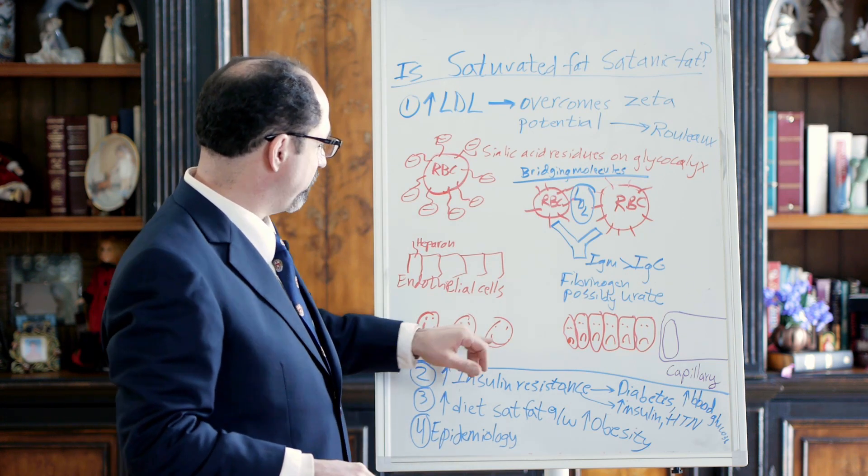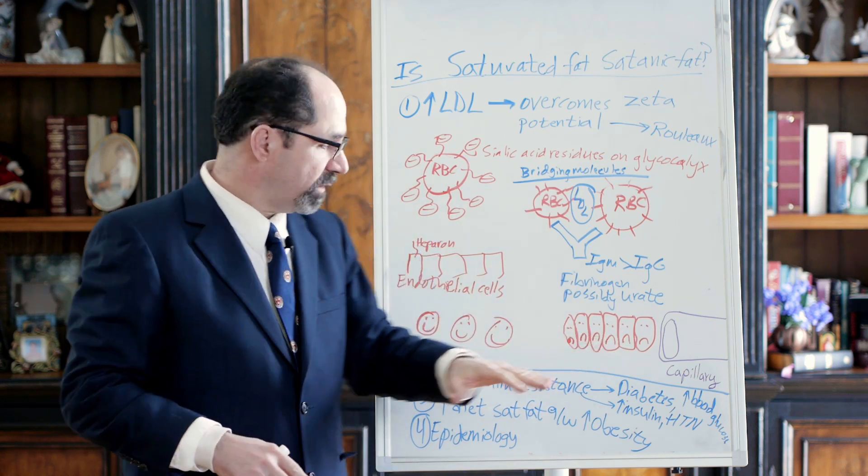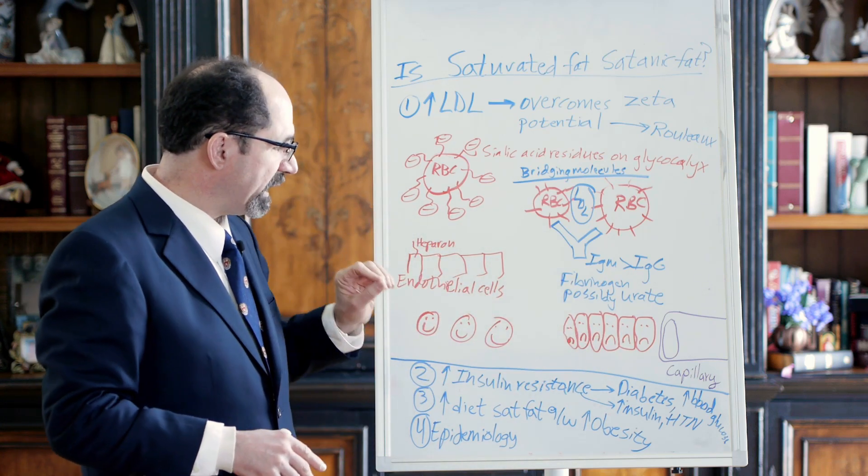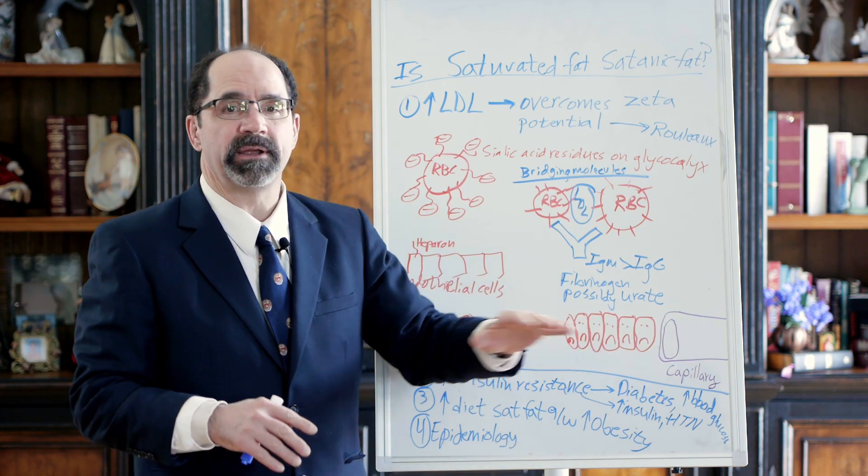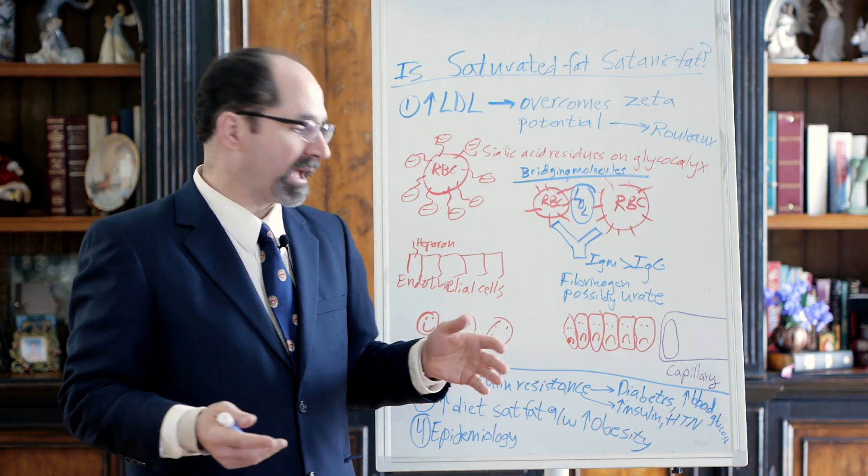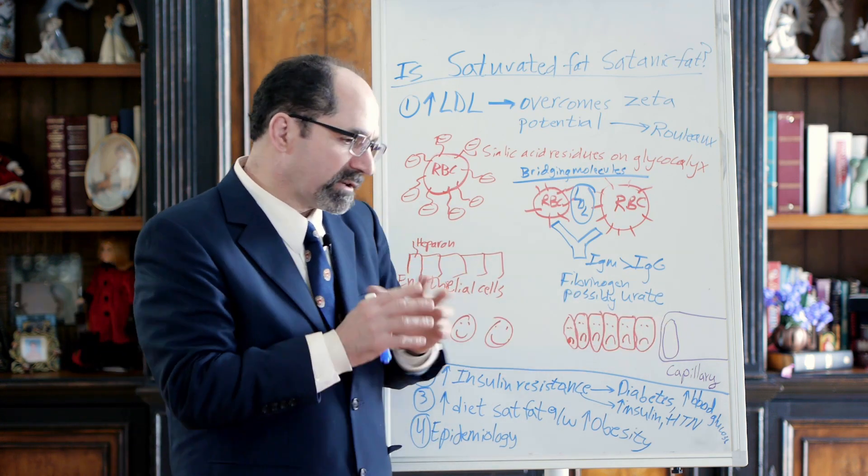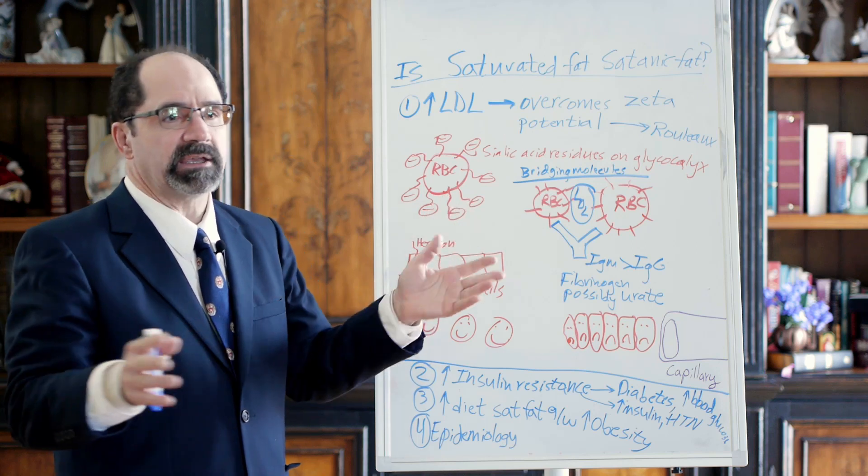I drew the RBCs here with smiley faces, meaning they're flowing independently of each other in the blood under normal conditions. They each independently pass through a capillary individually. That's what you want. Typical red blood cells are about the same size as the capillary, about five to seven microns, and they have to deform a little bit to pass through the capillary.